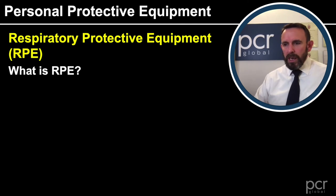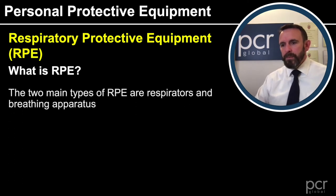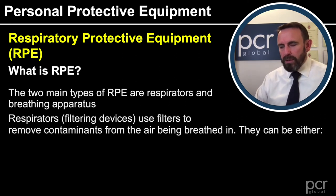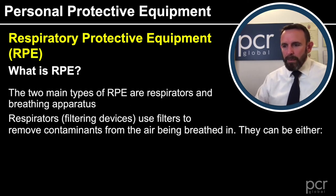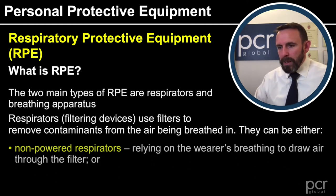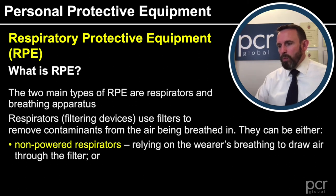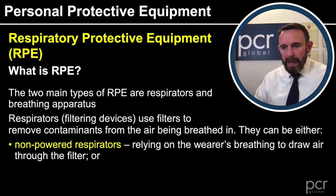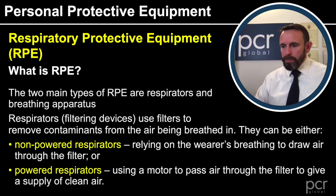So now we can look at personal protective equipment, and in particular RPE — respiratory protective equipment. There are two main types: respirators and breathing apparatus. Respirators are filtering devices that use filters to remove contaminants from the air when being breathed in. They can be either non-powered respirators, which rely on the wearer's breathing to draw air through the filter, or powered respirators, which use a motor to pass air through the filter to give a supply of clean air.